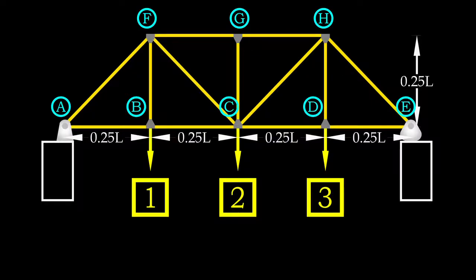Bridge loading is transferred to bottom chord nodes and therefore, we only need to analyze the truss in three cases, excluding the cases where the unit load applied directly on the supports. In those cases, the force in members will be zero.